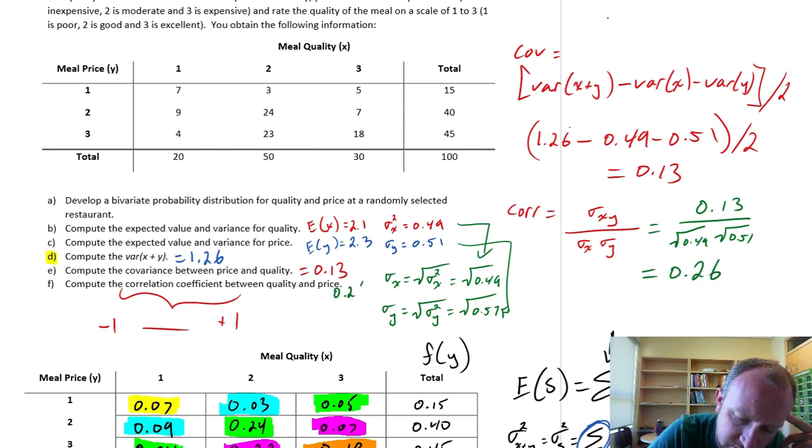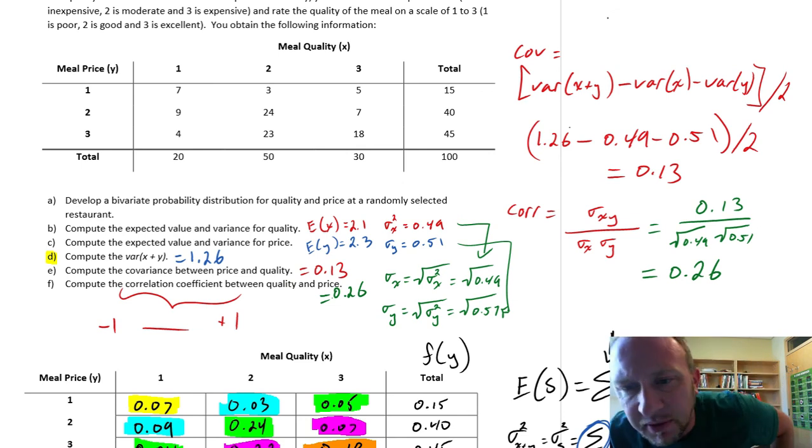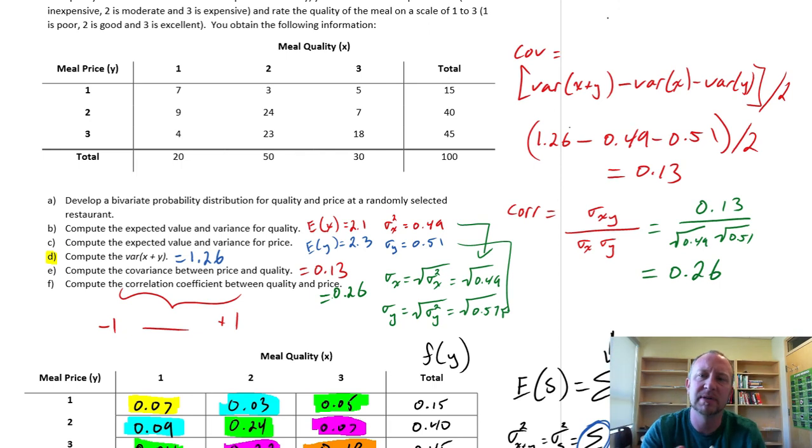0.26 final answer. So we have a positive relationship. It's not strong, but it's there. And that's sort of what we would expect in this type of problem. We're looking at the relationship between meal price and meal quality. We would expect a positive relationship, which means that as the meals become more expensive, meal quality tends to rise with price.